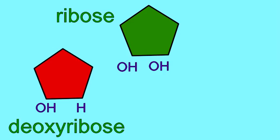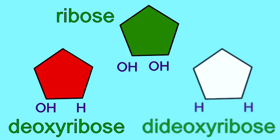This is why it's called deoxyribose, missing that oxygen on the two-prime carbon. Dideoxyribose lacks oxygens on both the two-prime and three-prime carbons, possessing only hydrogens here.